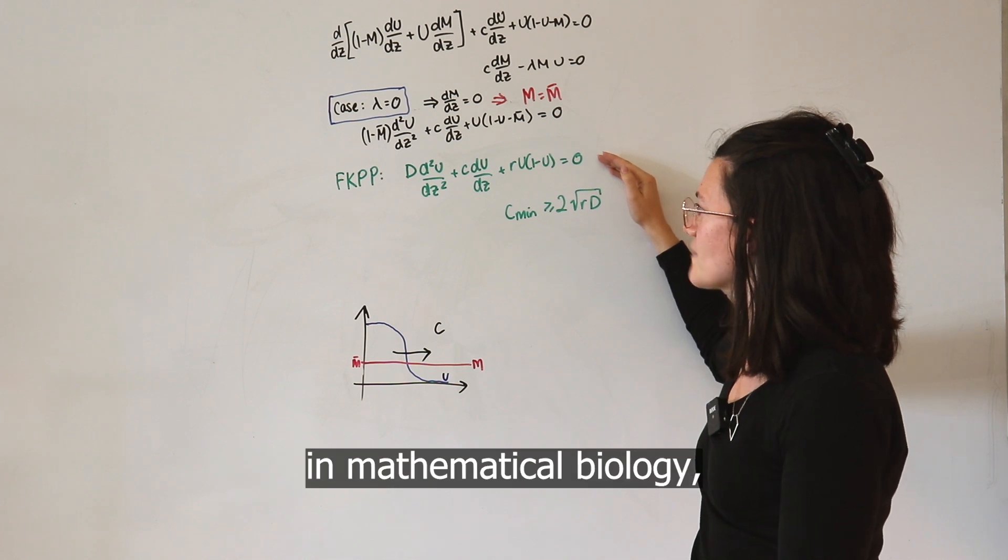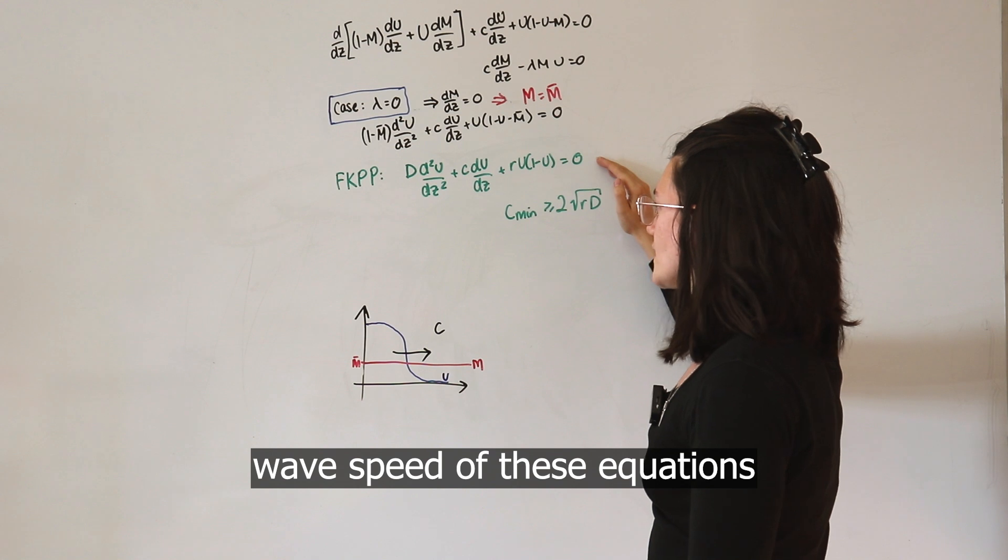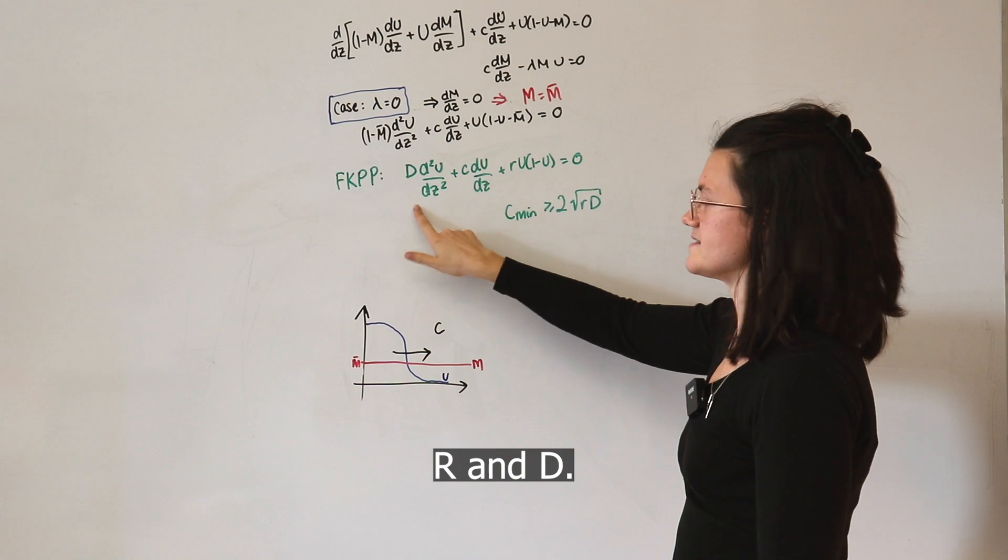This is a very well-studied equation in mathematical biology, and what we know is that the minimum traveling wave speed of these equations will always take the form of 2 times the square root of the parameters R and D.